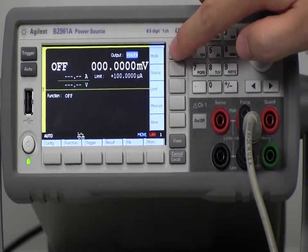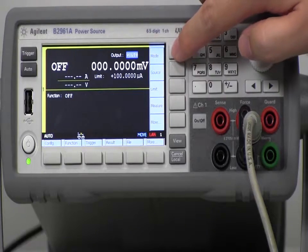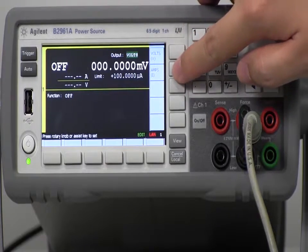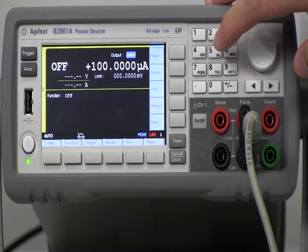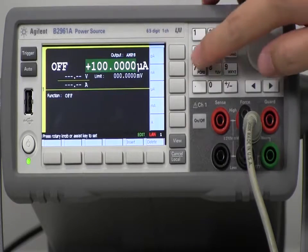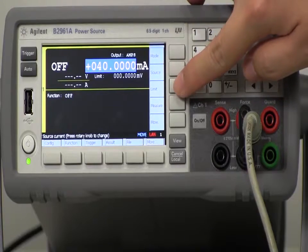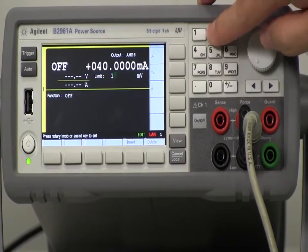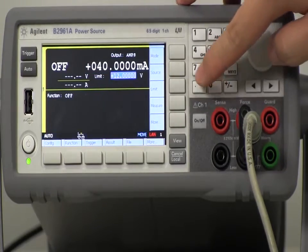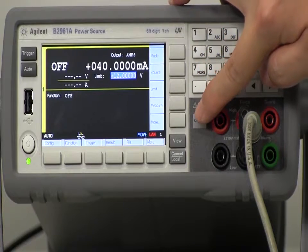Change the power source B2961A mode from voltage to current, and then set the current value to 40 milliamps, the recommended value, and then set the output voltage limit, and then press the output button.